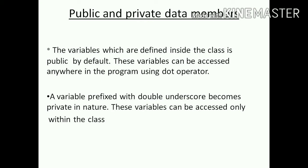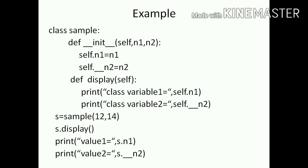A variable prefixed with a double underscore becomes private in nature. Private variables can be accessed only within the class. Within the class, the syntax is class_name.variable_name.